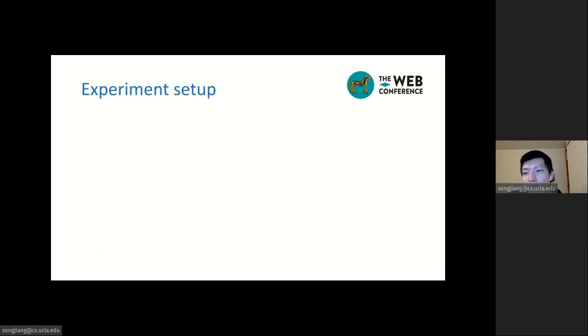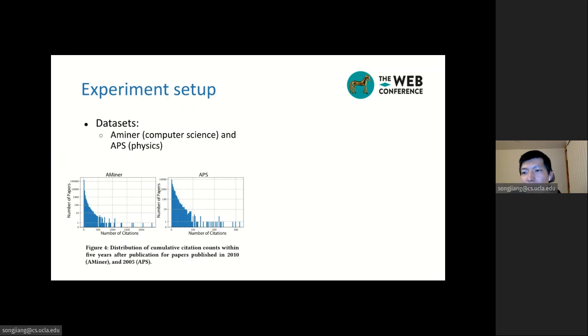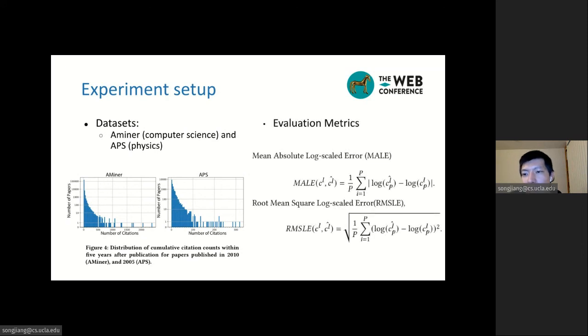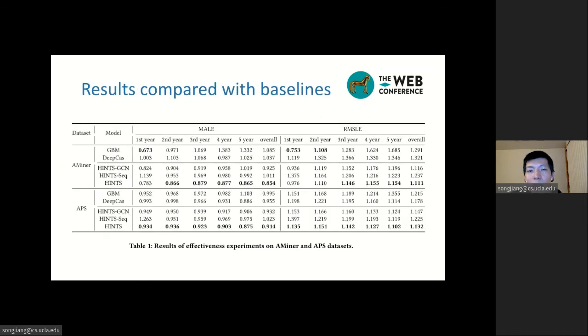Now we will introduce our experiments. We evaluate our framework on two datasets, Aminer and APS. Aminer is about papers in computer science, and APS are physics papers. This figure shows the five years cumulative citation count distribution of papers in both datasets. And we use two evaluation metrics, the MAE and RMSE. Please note that both metrics are in log scale. And this table shows the comparison results of our model. Overall, our model achieves better performance than the baseline models.